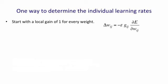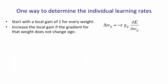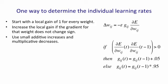Then what we're going to do is adapt Gij. We're going to increase Gij if the gradient for the weight does not change sign. And we're going to use small additive increases and multiplicative decreases. So if the gradient for the weight at time t has the same sign as the gradient for the weight at time t minus 1, where t refers to weight updates,